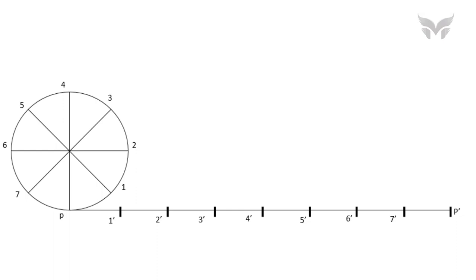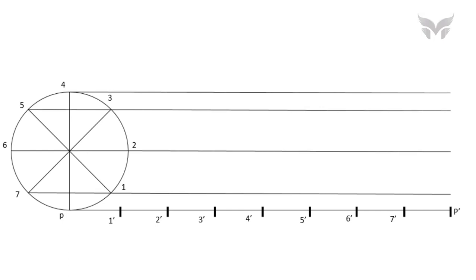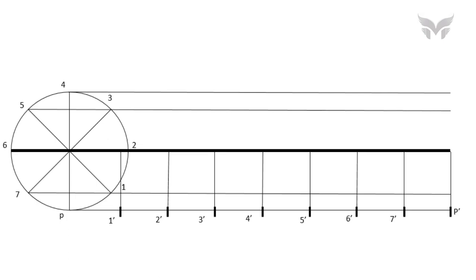Next, draw horizontal lines from all the points on the circumference of a circle. Then draw vertical lines from points 1 dash, 2 dash, 3 dash, up to P dash. And we have to extend these lines up to the horizontal line which is passing through the center of circle. Name the point of intersection of all vertical lines with the horizontal center line as C1, C2, C3, C4, up to C7.